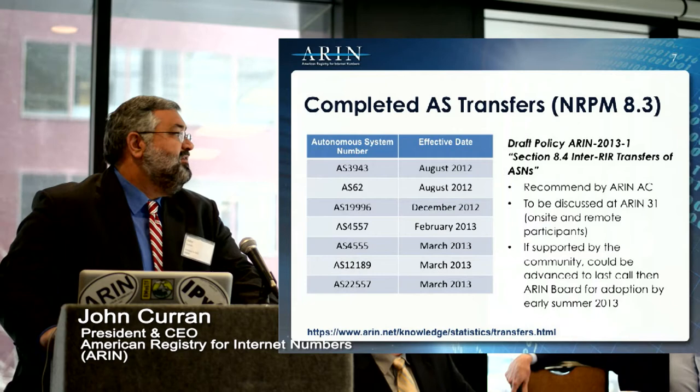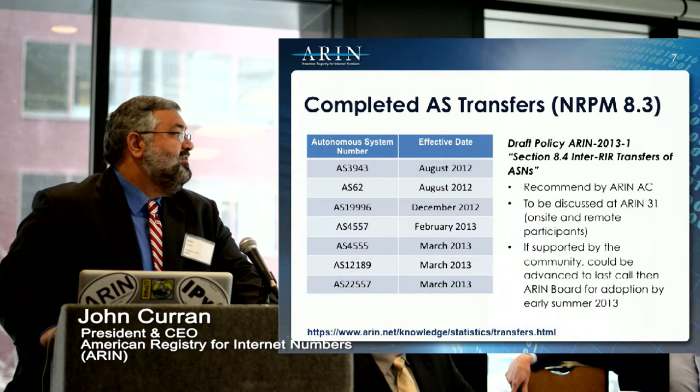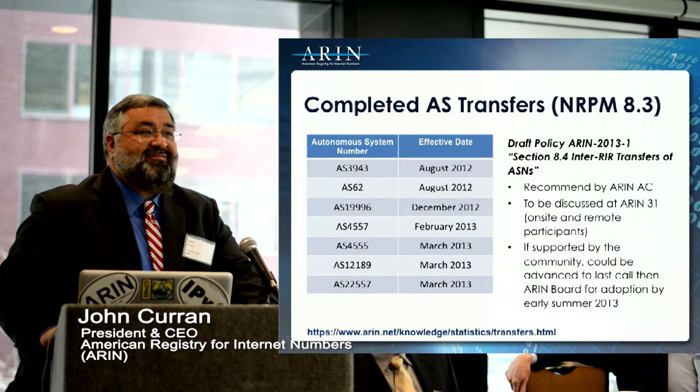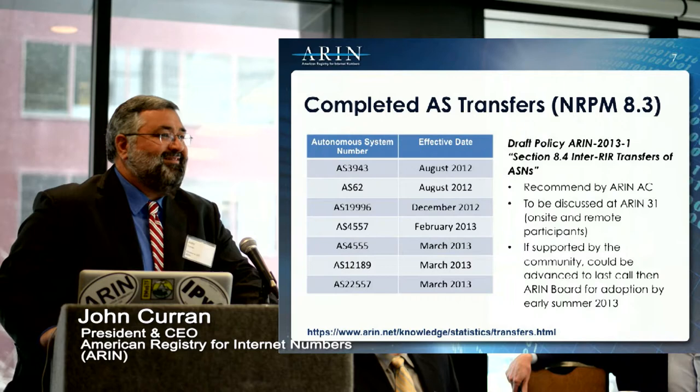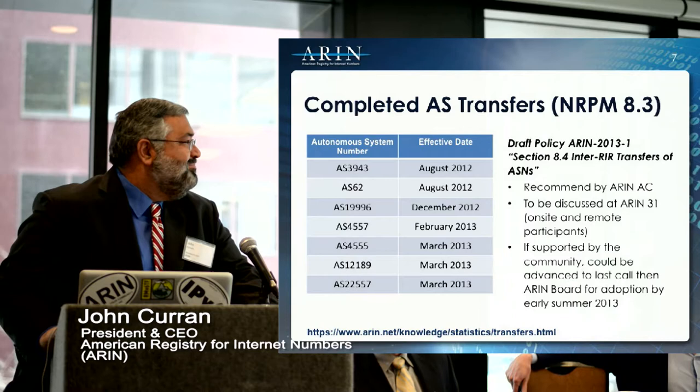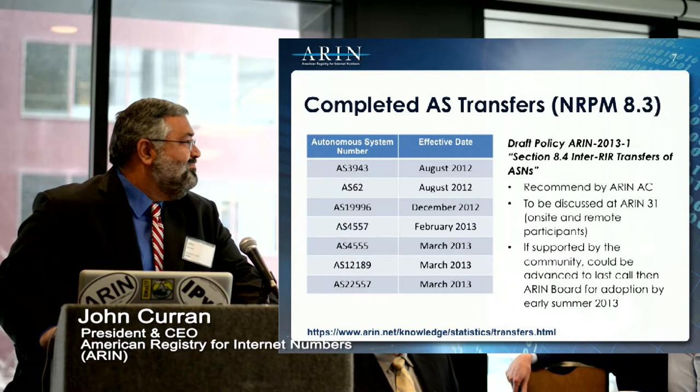There is a policy proposal, 2013-1, which will be discussed next week and would allow inter-RIR transfers of AS numbers. I don't know if there's a lot of demand for that — we've only had seven AS transfers happen. Some say it's a matter of completeness: it should be allowed if it's not forbidden. Others say if there's no demand, why add more text to the policy manual? ARIN will implement whatever the community decides is right.